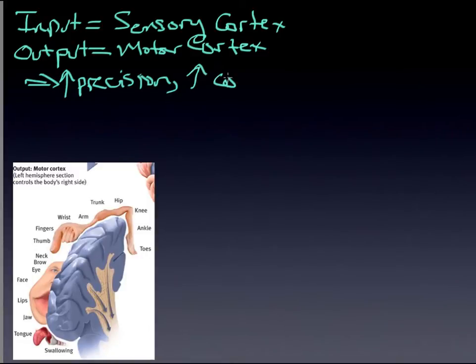But again, the same principles apply here: greater precision, greater cortical area. Again, as I pointed out when we were looking at the sensory cortex, the control of facial features, for example, has a huge amount of cortical area devoted to it—the eyebrows, the eyes, the neck, the facial features, the facial muscles are all very much connected to this area.